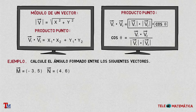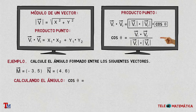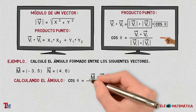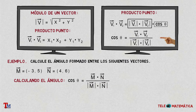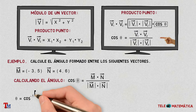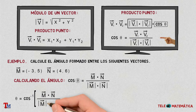What they ask us is to calculate the amplitude of the angle between these two vectors, so we will use the formula: cosine of the angle equals vector M dot vector N divided by the module of vector M times the module of vector N. Since we want the amplitude of the angle, we apply the inverse cosine, so the angle equals cosine⁻¹ of the dot product divided by the product of the modules.